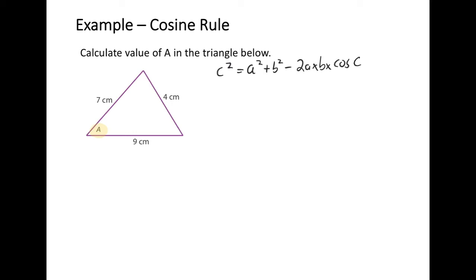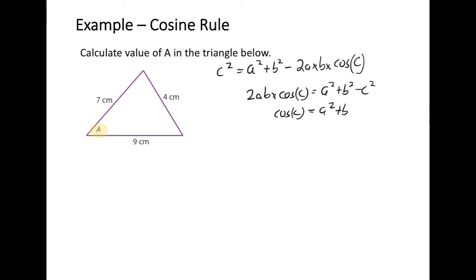Rearranging that formula to get cos of angle c by itself: 2ab times cos of c equals a squared plus b squared minus c squared. So cos of angle c equals a squared plus b squared minus c squared, divided by 2ab. That is the formula I'm going to substitute into.